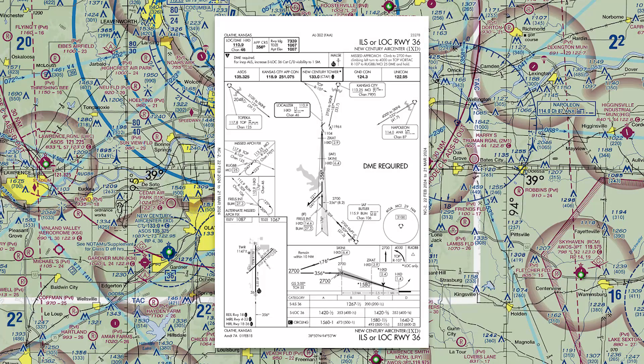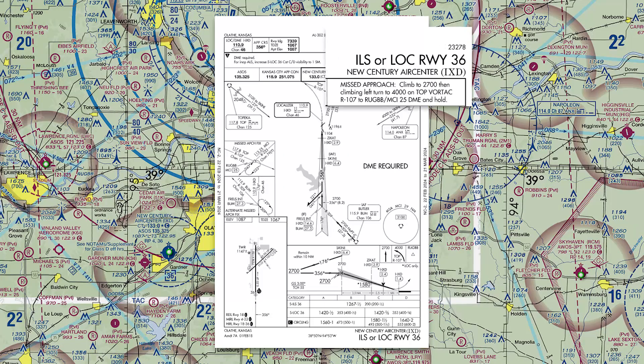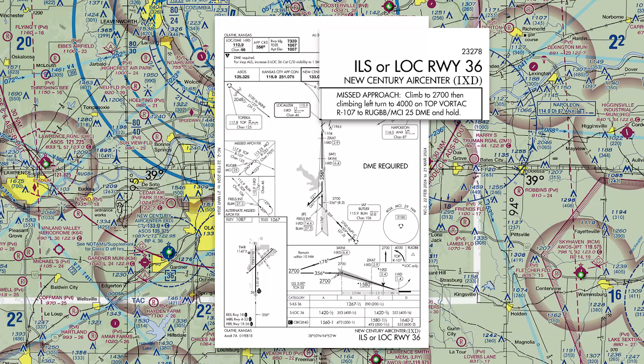Here is an example of going missed from the ILS runway 36 approach at New Century Air Center in Olathe, Kansas. As you can see in the approach chart, the published missed approach procedure involves a climb to 2700, then a climbing left turn to 4000 on the Topeka-Vortac-107 radial to Rugby intersection and hold. So let's see how the GFC-600 Autopilot manages this procedure with a GTN-XI navigator.